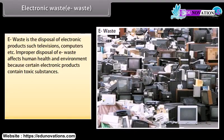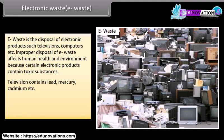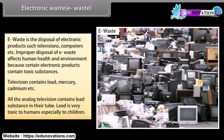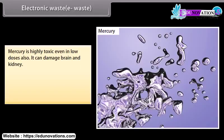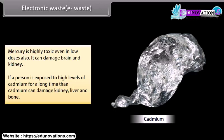E-waste is the disposal of electronic products such as televisions, computers, etc. Improper disposal of e-waste affects human health and environment because certain electronic products contain toxic substances. Televisions contain lead, mercury, and cadmium. All analog televisions contain lead in their tubes — lead is very toxic to humans, especially children. Mercury is highly toxic even in low doses and can damage the brain and kidneys. Exposure to high levels of cadmium over a long time can damage the kidney, liver, and bone.